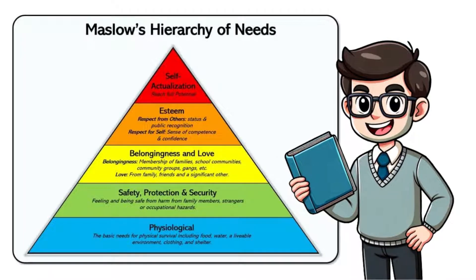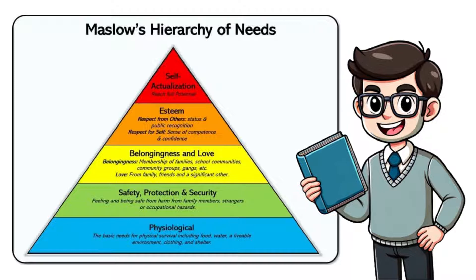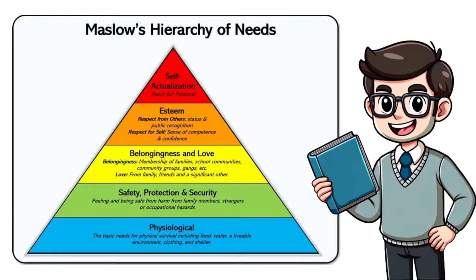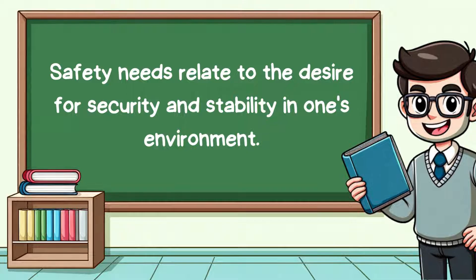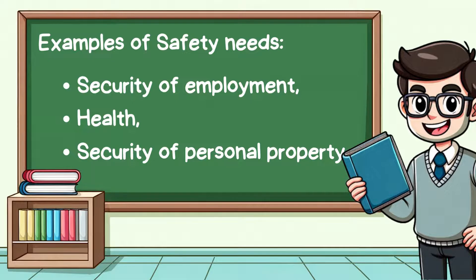Once an individual's physiological needs are met, the second level of Maslow's hierarchy comes into focus – safety needs. These needs relate to the desire for security and stability in one's environment. This includes not just physical safety, but also financial and emotional safety. Examples are security of employment, health and personal property.